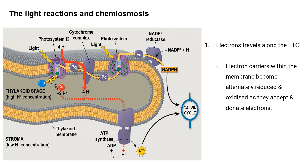Embedded at the thylakoid membrane are the photosystems — both Photosystem II and Photosystem I. We can also see electron carriers: plastoquinone (PQ), cytochrome complex, plastocyanin (PC), and ferredoxin (Fd). Another enzyme found here is ATP synthase, which is also embedded at the thylakoid membrane.